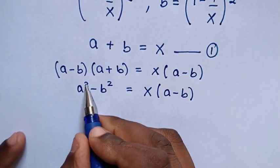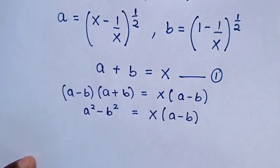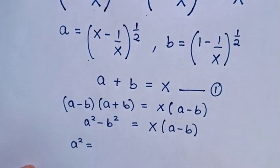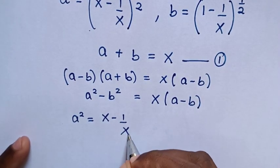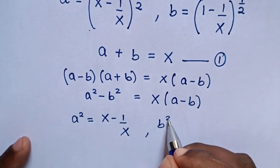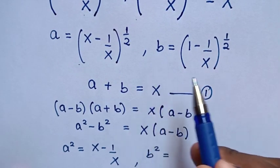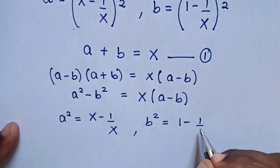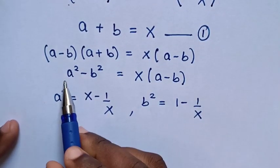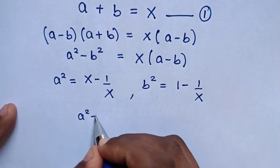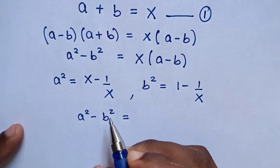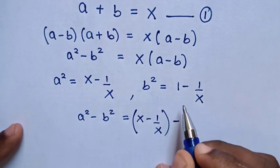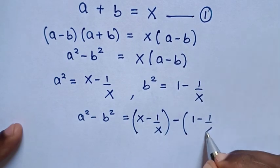In the next step, we substitute the value of a and b. a squared equals (x minus 1 over x) to the power of a half, squared — which gives (x minus 1 over x). And b squared equals (1 minus 1 over x) to the power of a half, squared — which gives (1 minus 1 over x).